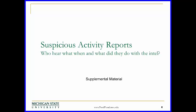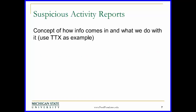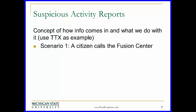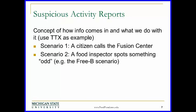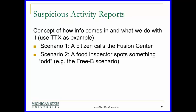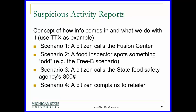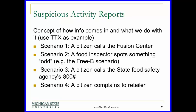Appendix. We'll quickly look at the suspicious activity reports — who, what, when, and what did they do with the intel. The concept of how information comes in and what we do with it: a couple of different ways information comes in. A citizen calls a fusion center or an agency. Another scenario is a food inspector spots something odd, such as using the freebie scenario here. A citizen calls a state food safety agency 800 number. These are all ways that we become alerted to suspicious activity. And finally, a citizen complains to a retailer. These are different ways that information does come in.